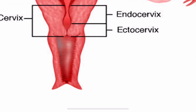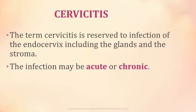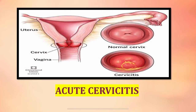The endocervix is lined with glandular epithelium, whereas the ectocervix is lined by squamous epithelium. The glands and stroma of the endocervix will have inflammation. This infection could be acute, resulting in acute cervicitis, or chronic, resulting in chronic cervicitis.